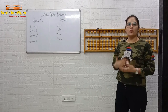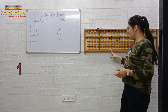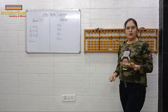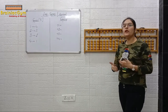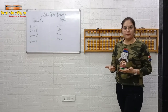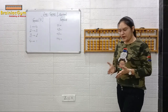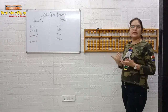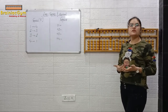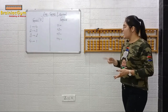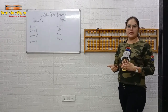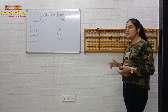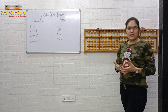Now we have to do plus one. Are we able to use the direct method? No, right? Then what will you use? Small friends. When we are unable to use the direct method, we will use small friends. So how will we do plus one? That is the question.